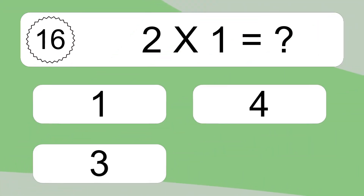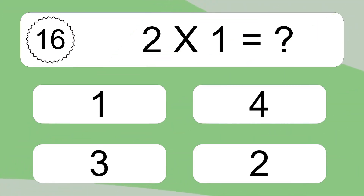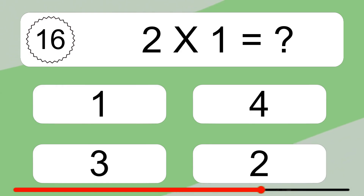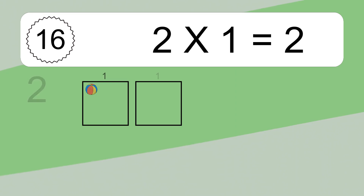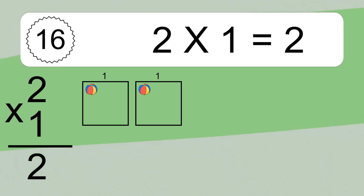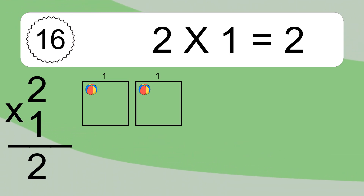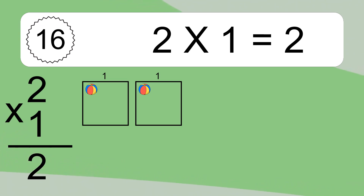2 times 1 equals what? 2 times 1 equals 2. We have 2 boxes, and each box has 1 colorful ball inside. If you count all the balls in all the boxes together, you will have 2 times 1 balls. This equals 2 balls.